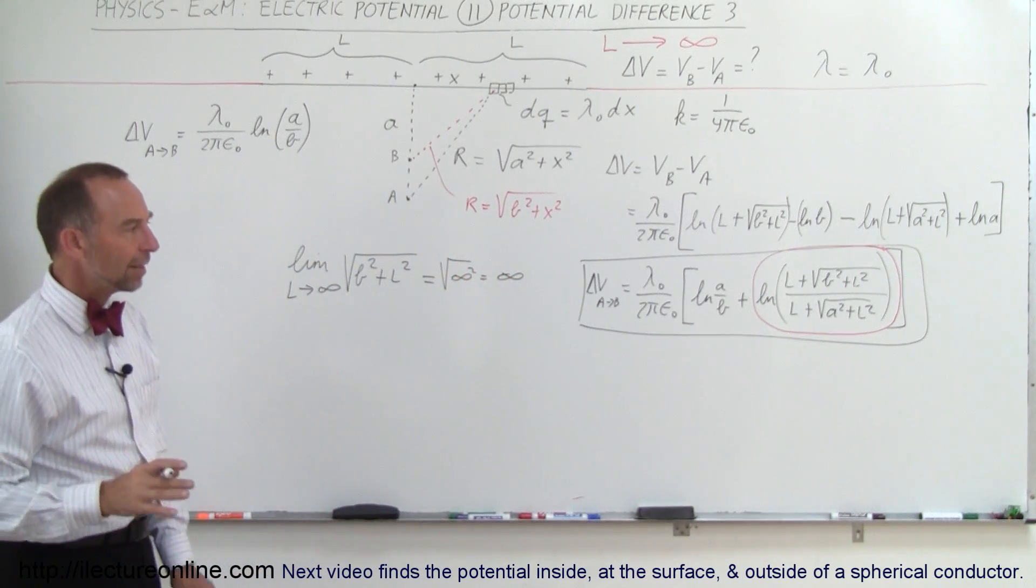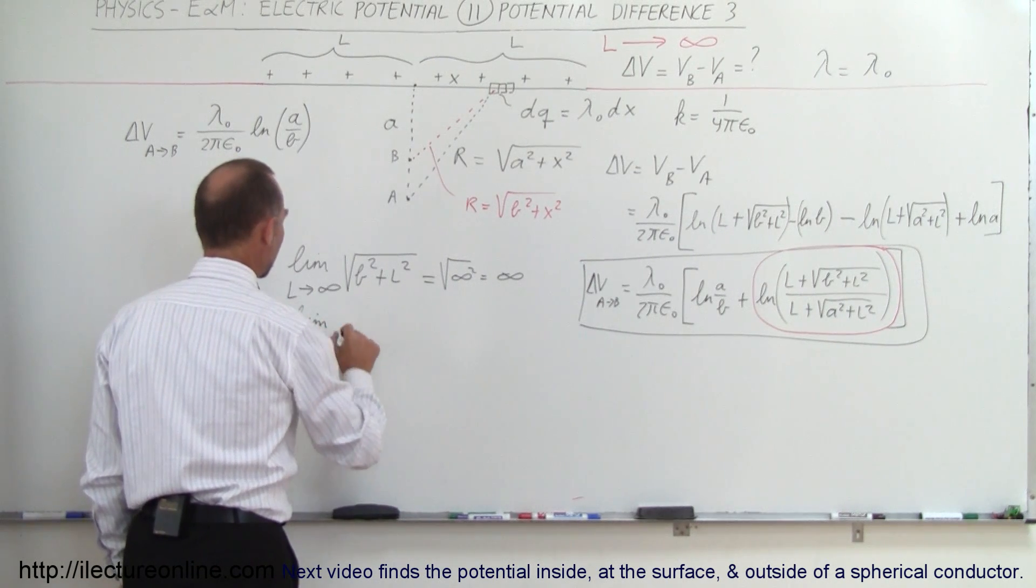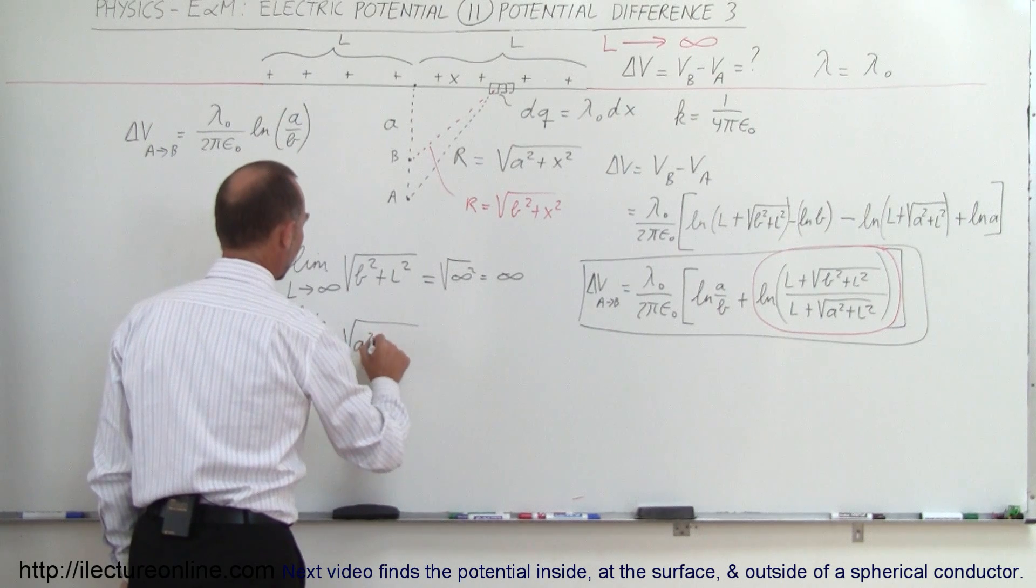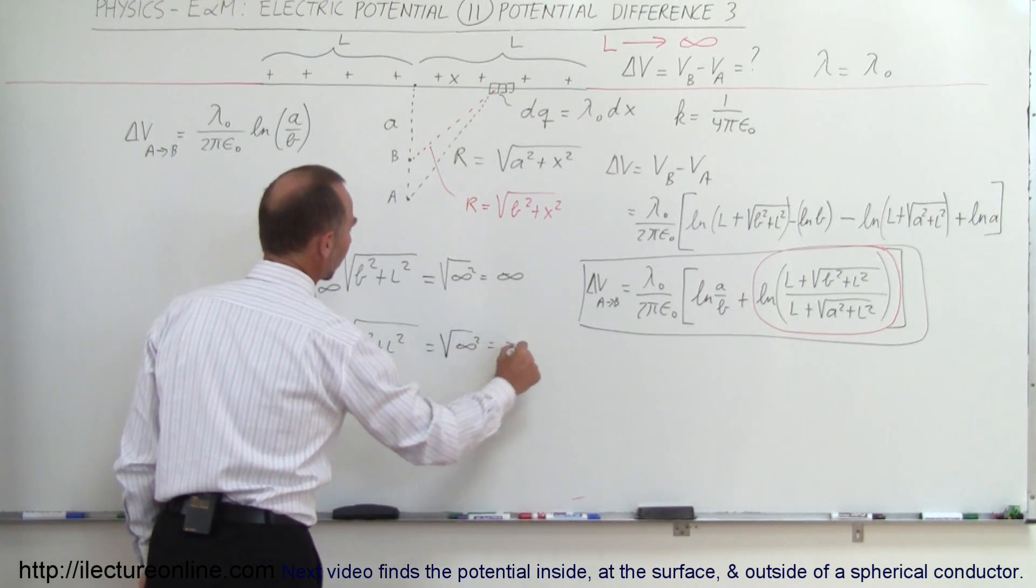All right, the denominator is the same thing. Take the limit as L approaches infinity of the square root of A squared plus L squared—well that becomes the square root of infinity squared, which is equal to infinity.